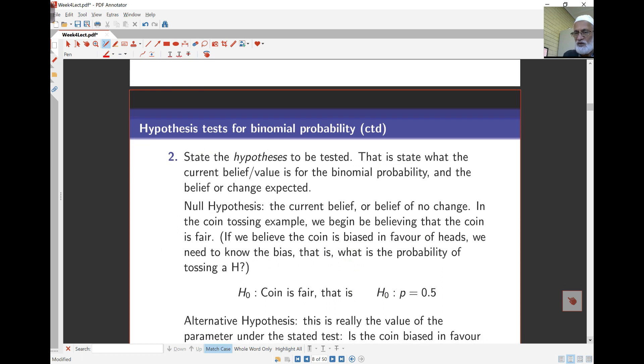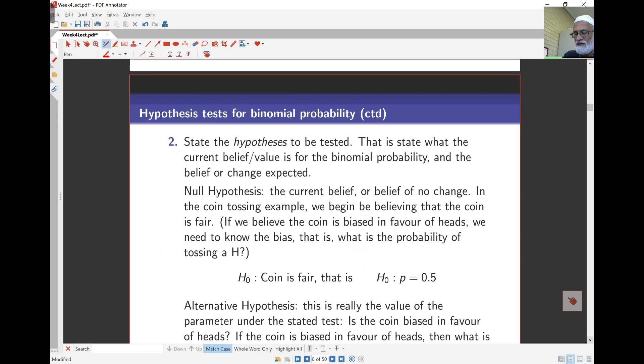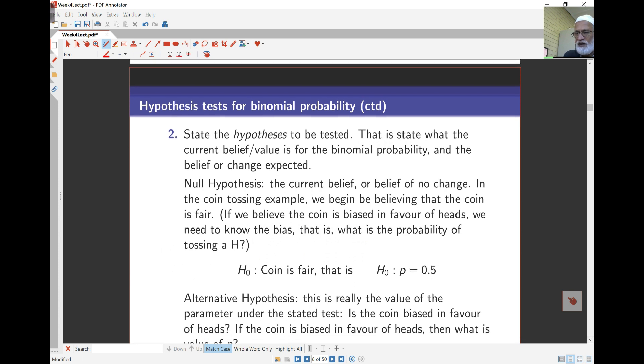The next step is to state the hypothesis that are being tested. The question is we want to see whether the coin is biased or not. We don't start off by assuming the coin is biased. We take what's called a neutral or null position. The null position is essentially one that says the current belief or belief of no change. So I'm going to start off by assuming that the coin is not biased, that the coin is fair. In other words, my H0, null hypothesis H0, says that P is 0.5. This is what I am assuming the value of the probability of heads to be under the null hypothesis. In other words, I am starting off to assume the coin is fair.